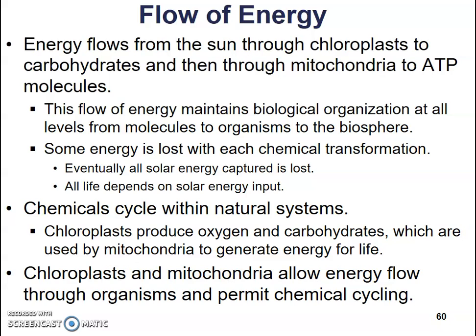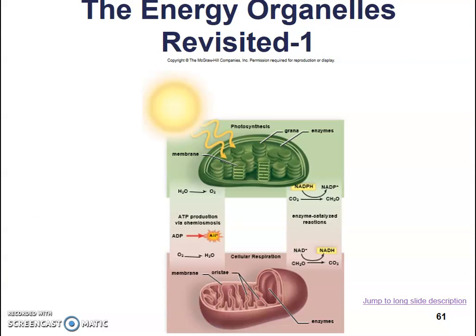Because of that, we depend on a constant input of solar energy into our environment. There are chemical cycles within natural systems: chloroplasts produce oxygen and carbohydrates, which are then used by the mitochondria to generate energy for life. Chloroplasts and mitochondria allow energy to flow through organisms and permit chemical cycling — allowing elements to be reused again and again. Here we have a diagram showing sunlight striking a chloroplast, producing carbohydrates, which are then used in the mitochondria to make ATP. That's it for the notes this chapter.